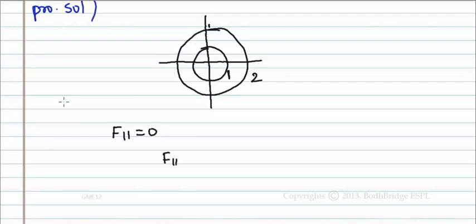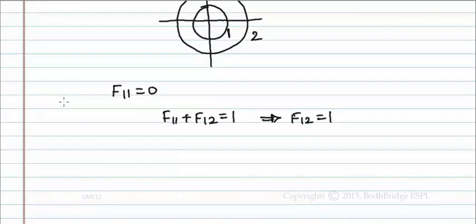That is, f11 plus f12 equals 1, so f12 equals 1. And also f21 plus f22 equals 1, so f22 equals 1 minus f21.